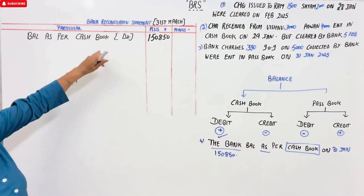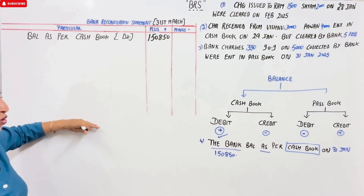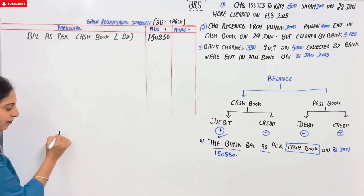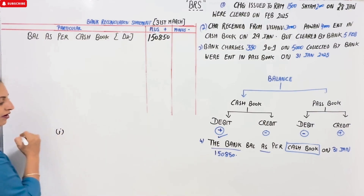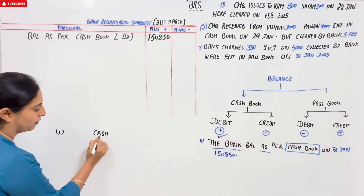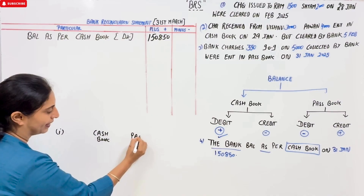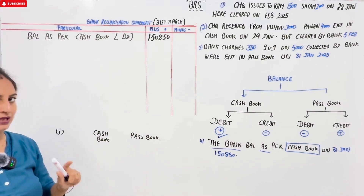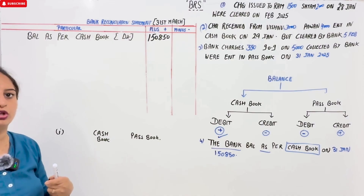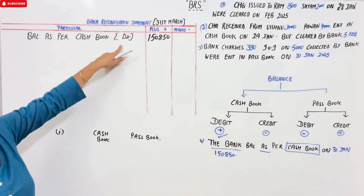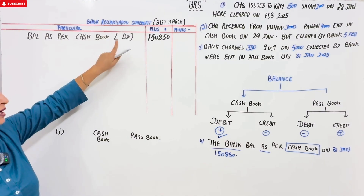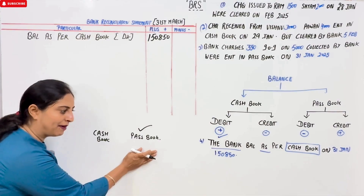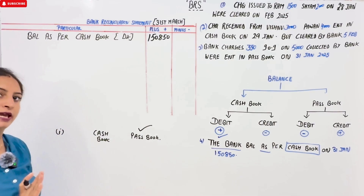Now the goal is to reconcile from the cash book balance to reach the passbook balance. We have our cash book on one side and the passbook on the other. For each transaction, we need to determine whether it results in a plus or minus adjustment. The balance we start with is the cash book balance, and we need to make the passbook equal to it through adjustments.